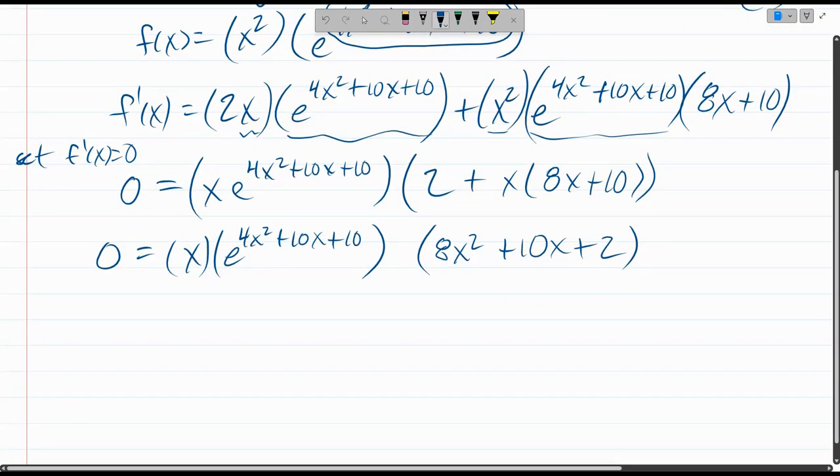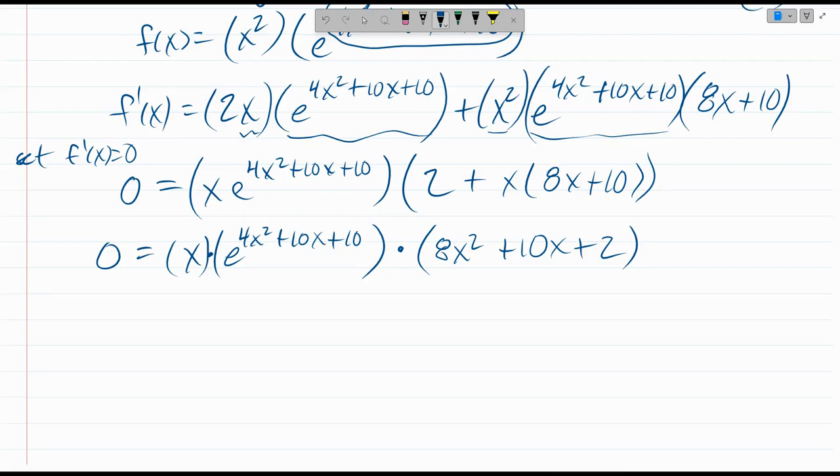We have three things multiplied together, and that product equals zero, which means individually each of them could be zero. So this is a zero product property. I just abbreviated it zpp. All right, easy one. First product x could be zero.